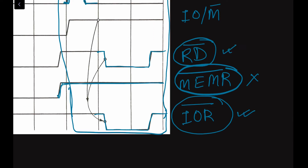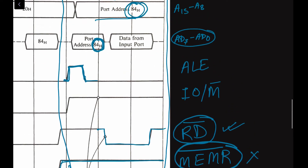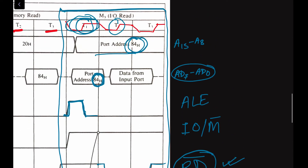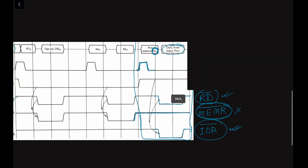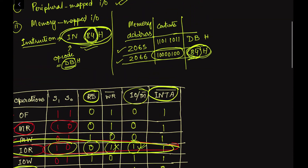The data from the input port will come through the AD7–AD0 address-data multiplexed bus and will be loaded into the accumulator. In this way, the data is read from the input-output device and loaded into the accumulator. This is all about the input-output read machine cycle and its timing diagram.